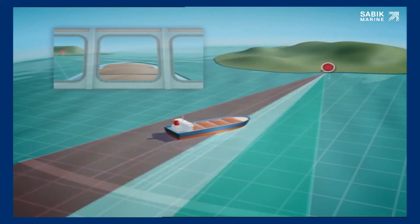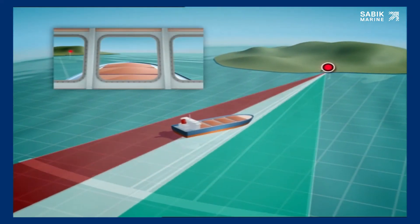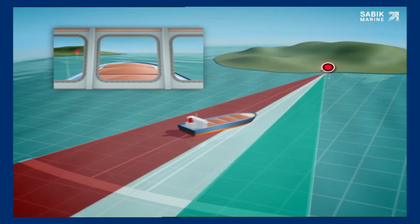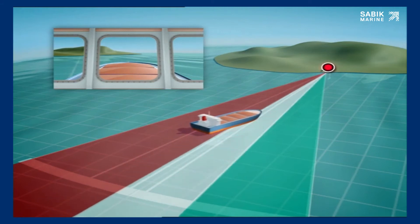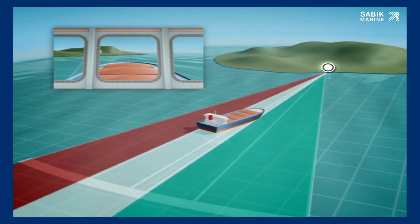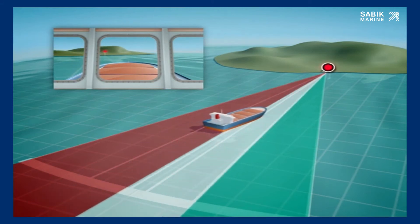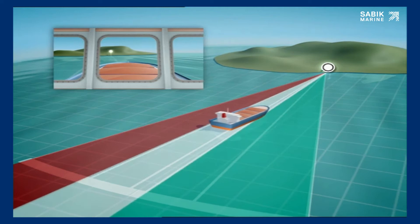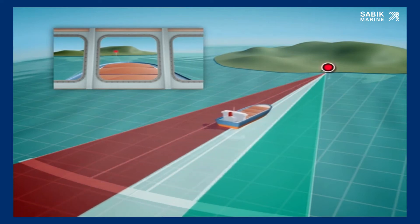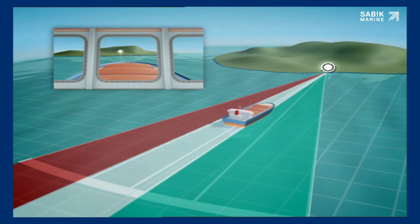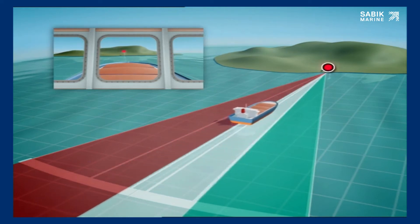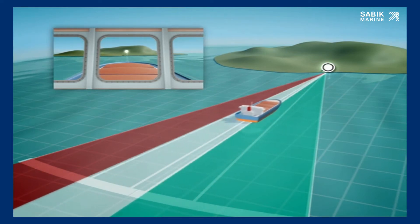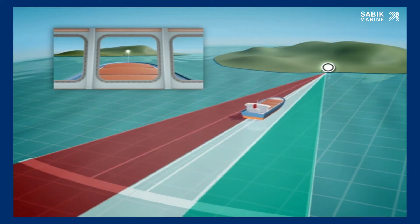The duration of the coloured flash increases as the sector of that colour is approached. Notice how the red flash gets shorter and the white flash gets longer as the vessel moves onto the centre line.